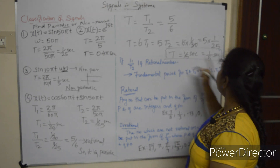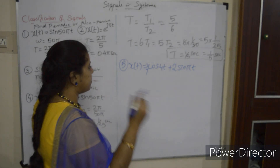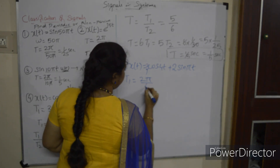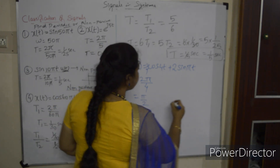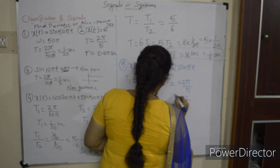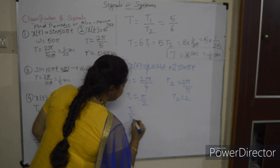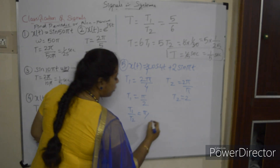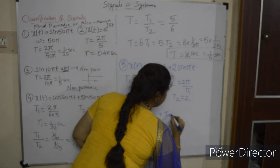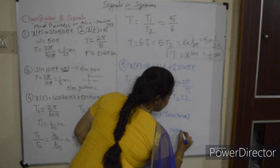Problem 5: x(t) = 3cos(4t) + 2sin(πt). T1 = 2π/4 = π/2. T2 = 2π/π = 2. T1/T2 = (π/2)/2 = π/4. Since π/4 is an irrational number, the signal is non-periodic.